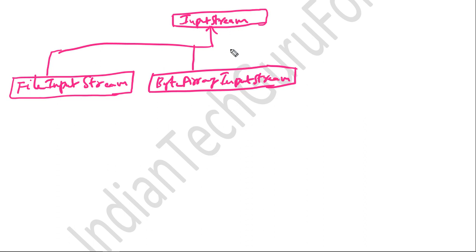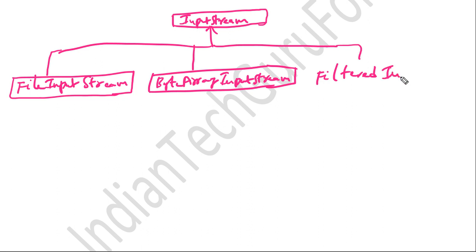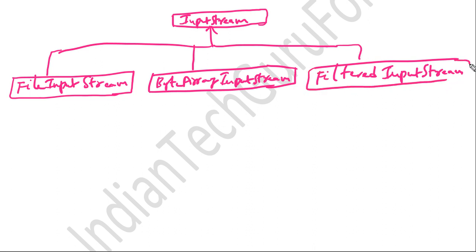The third class derived from the InputStream class is the FilterInputStream class. So these are the mostly used classes derived from the InputStream class: FileInputStream, ByteArrayInputStream, and FilterInputStream.